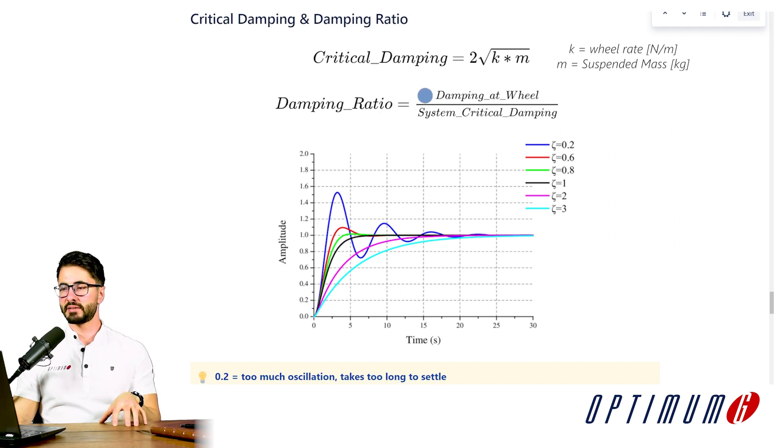The second and even more important parameter is what is the damping ratio that we want to run. The damping ratio is nothing more than the damping that we're really running on the car as measured at the wheel compared to the system critical damping. So if we're running a damping which is a lot higher than the critical damping of the system, this number will be above one. As we can see here, we have a lot of damping, so it takes a lot of time for the system to go back to its initial position after an initial displacement.